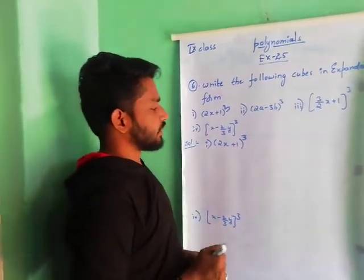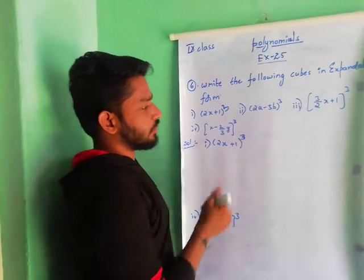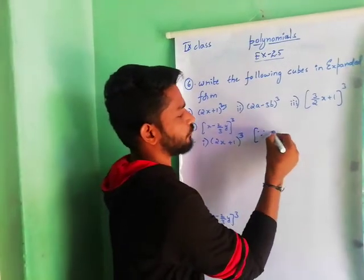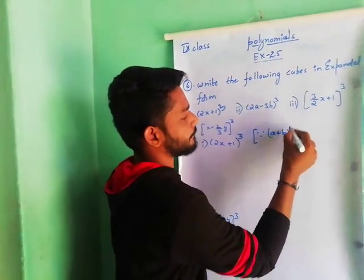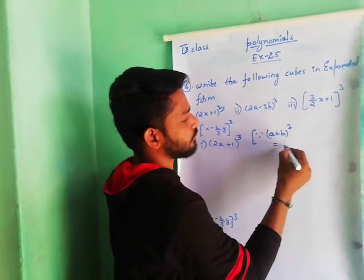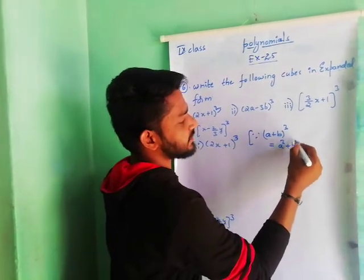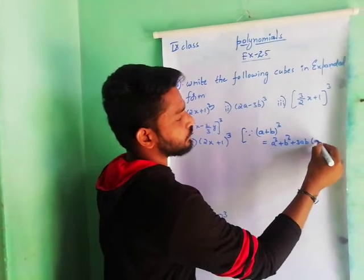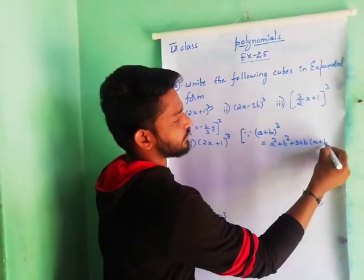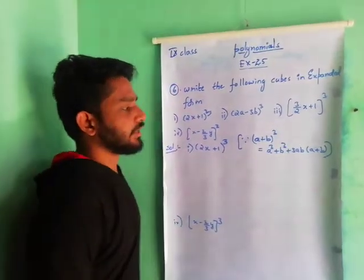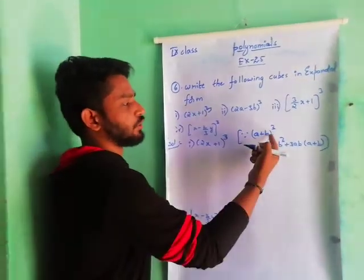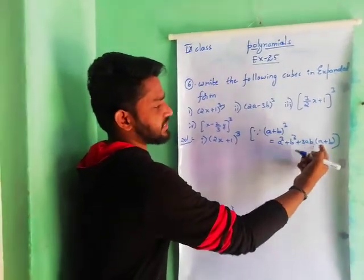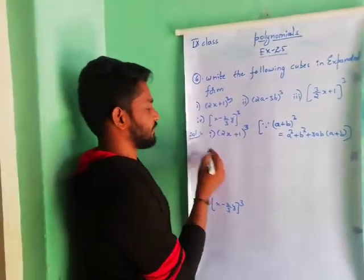Coming to the first one, it looks like (a + b) whole cube. So the (a + b) whole cube formula is: a cube plus b cube plus 3ab into (a + b).